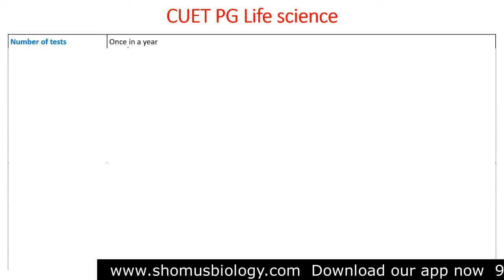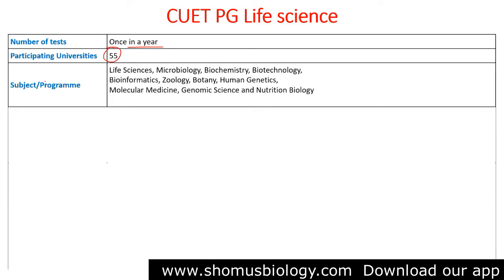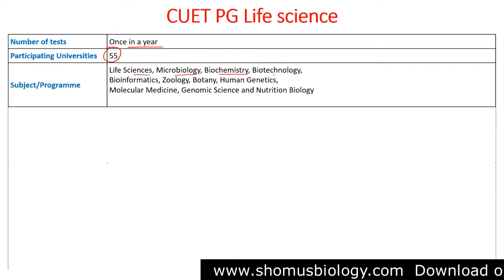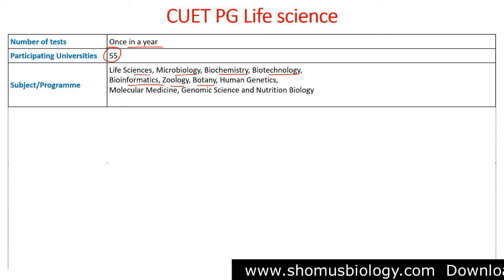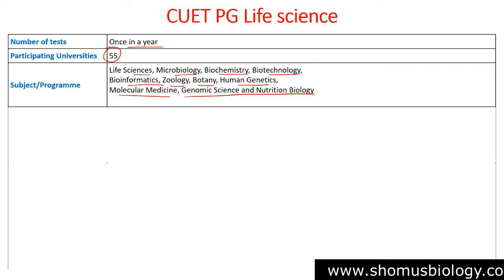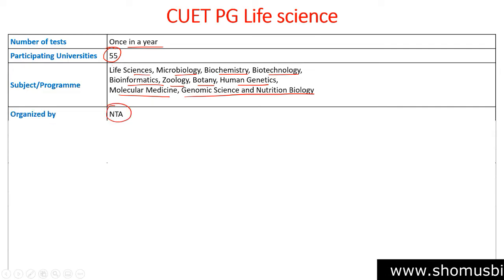We are going to talk about every single detail of the CUET PG Life Science examination. The test is conducted once a year. There are 255 subject programs available, and for life sciences, the subjects include microbiology, biochemistry, biotechnology, bioinformatics, zoology, botany, human genetics, molecular medicine, genomic science, and nutrition biology — across 55 participating universities, organized by NTA.